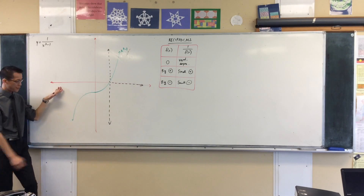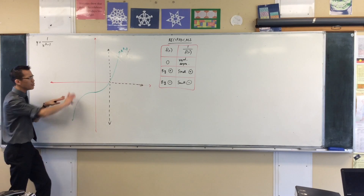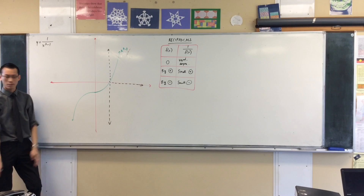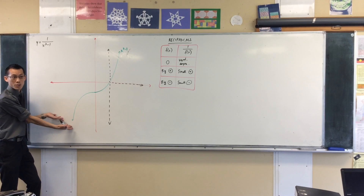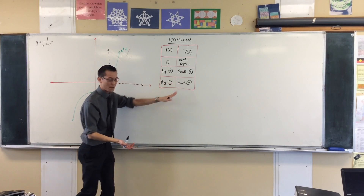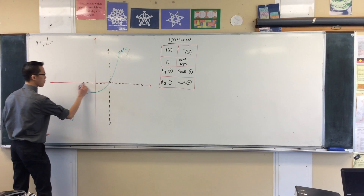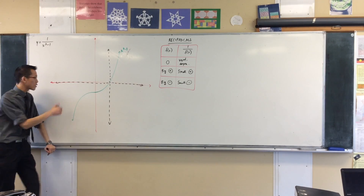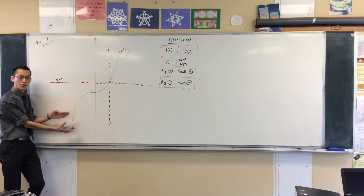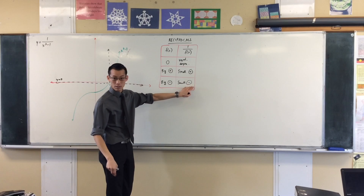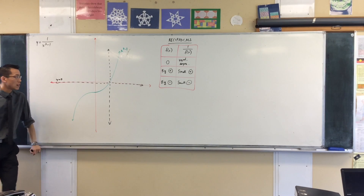Over here on the left I can make a similar argument. When you look at the extremities you often get the same kind of behavior but opposite. This is a huge negative number, so its reciprocal will be a small negative number. So again I've got y equals zero happening, but I'm going to be approaching from beneath because it still needs to be negative.